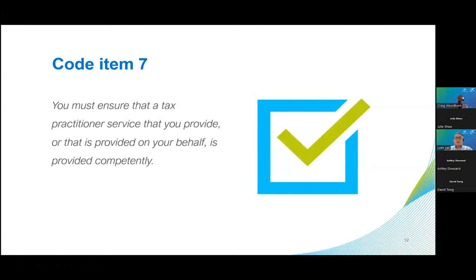Secondly, Code Item 7 states you must ensure that a tax practitioner service you provide, or that is provided on your behalf, is provided competently. If tax practitioners don't have sufficient IT controls in place and are reckless in their approach to cybersecurity, we may determine that they've not provided their service to clients competently and have breached the code. Determining if a registered tax practitioner has complied with their obligations requires each situation to be considered individually.